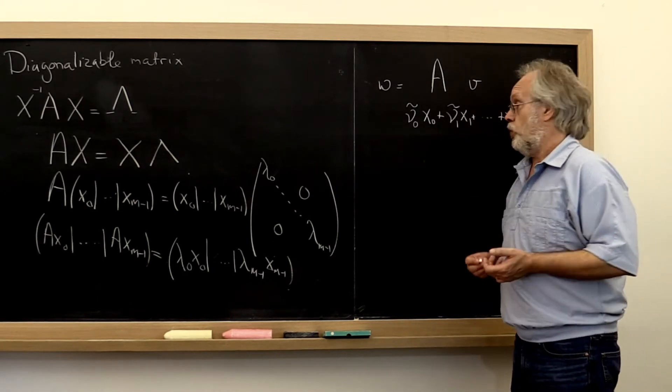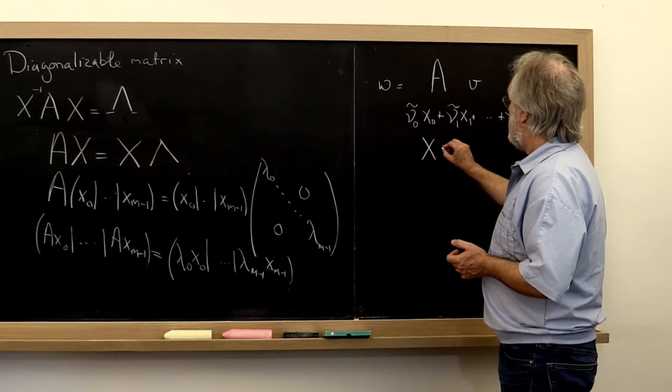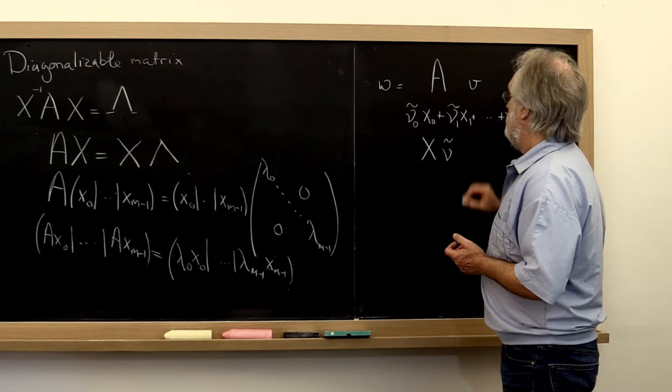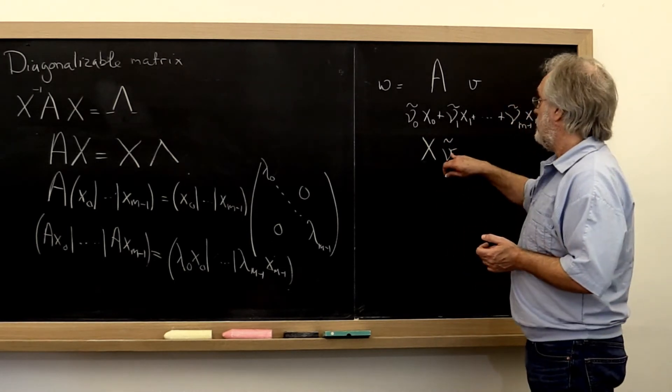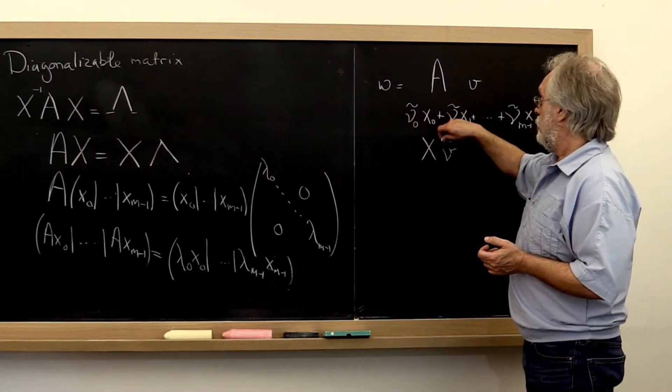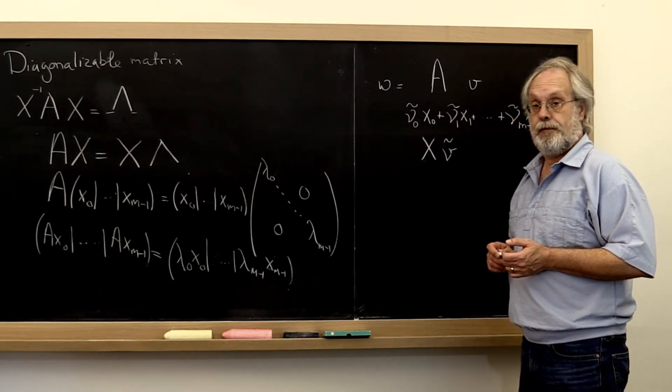A more convenient way of writing that is to say we can write it as X times v tilde, where v tilde is just a vector with these coefficients as its elements.